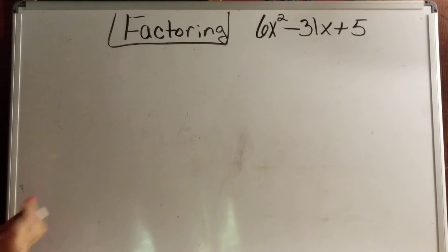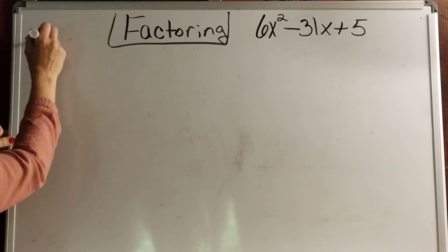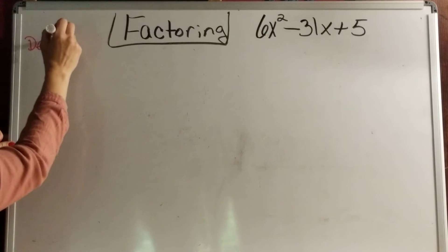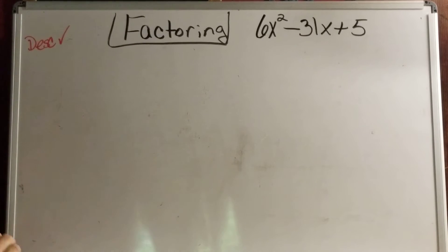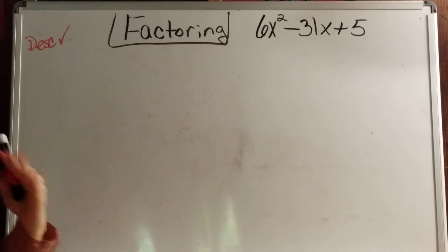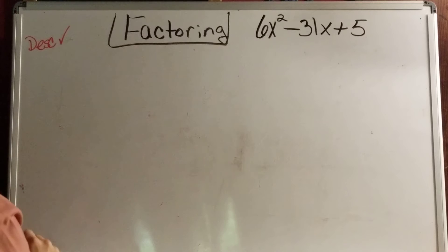Whenever factoring, my first thing is make sure it's in descending order. So if it's in descending order, I'm going to check off here. I'm going to say descending, abbreviate however you want, that lets you know that you checked it. It is in descending order.